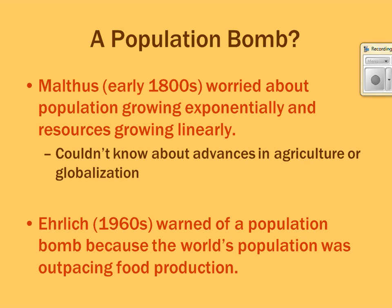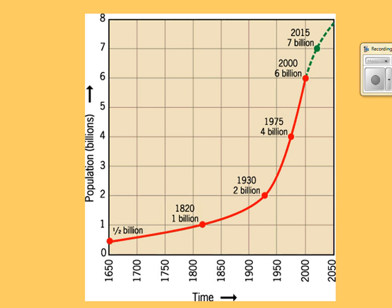There are still neo-Malthusians — Ehrlich is one discussed. In the 1960s he talked about a 'population bomb': the world population is doubling so quickly that it outpaces food production. This is that Malthusian graph — population is exponential while food production is more linear, so at some point you'll have more people than food.